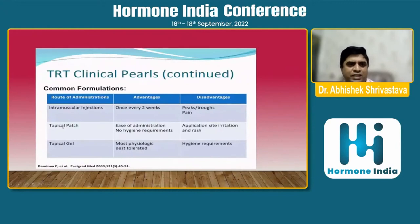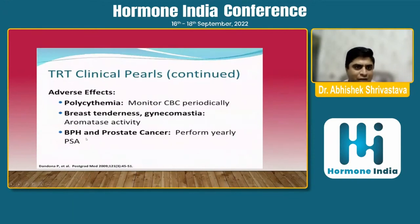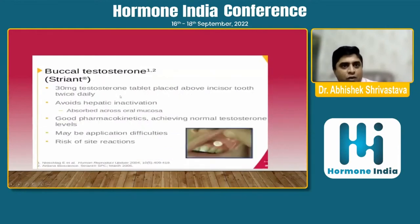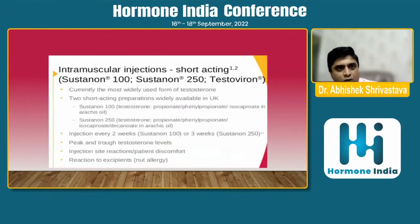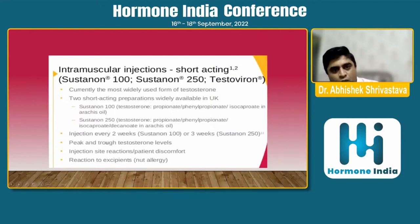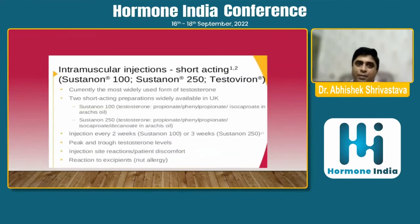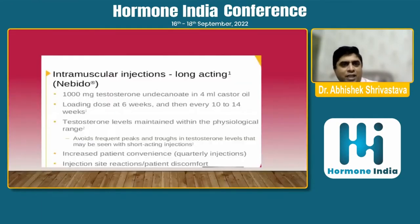Testosterone replacement therapies include: intramuscular injections, topical patches, and topical gels. Adverse effects include polycythemia, breast tenderness, BPH, and prostate cancer — these assays should be performed yearly. Oral testosterone is available as 40 mg tablets, given as BD or TDS daily. Buccal testosterone and subdermal testosterone implants are also available. Intramuscular injections are widely used and easily available — testosterone 25 mg is currently the most widely used form, given every two to three weeks. The remaining forms should be given as per individualized or customized protocols.